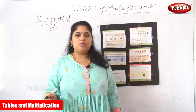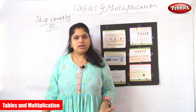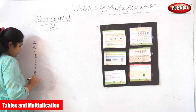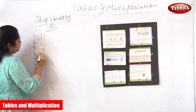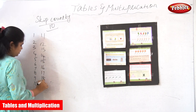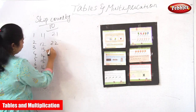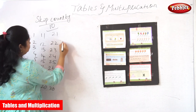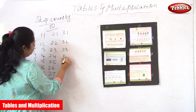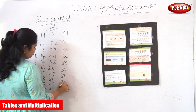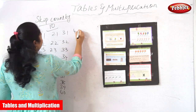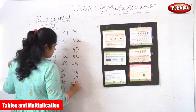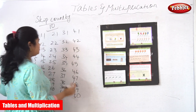Now you have some ideas about skipping of numbers. So how do you want to skip the numbers? 1, 2, 3, 4, 5, 6, 7, 8, 9, 10, 11, 12, 13, 14, 15, 16, 17, 18, 19, 20, 21, 22, 23, 24, 25, 26, 27, 28, 29, 30, 31, 32, 33, 34, 35, 36, 37, 38, 39, 40, 41, 42, 43, 44, 45, 46, 47, 48, 49, 50. I am just taking about the 50 numbers.